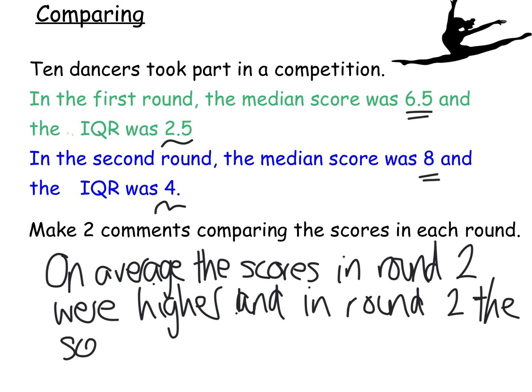Excuse my handwriting. So to recap why I've written what I've written. To compare the medians, I've changed that to average. And because the median had gone up, I've said that the scores on average are higher, or the scores on average have gone up. And because IQR is higher, it means that the scores in round two are more varied as well. You could take this from the completely other stance. And you could say, on average, the scores in round one were lower. And the scores in round one were less varied.